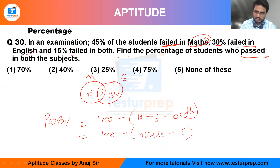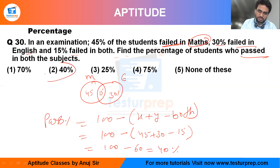So it becomes 100 minus (45 + 30 − 15), which is 100 minus 60, and you get 40%. The answer is 40% — option number 2.